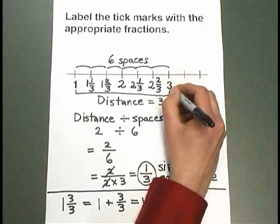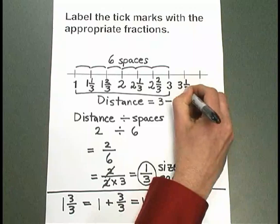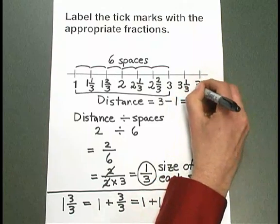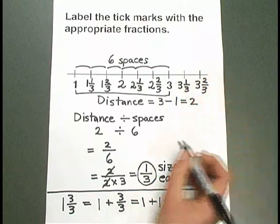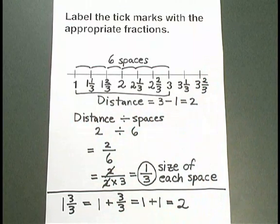Now let's continue beyond the 3. 3 plus 1 third is 3 and 1 third. Plus another third is 3 and 2 thirds. And there we have all the tick marks labeled on this number line.